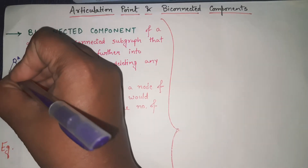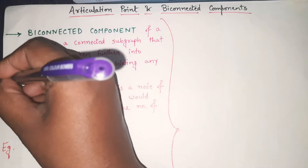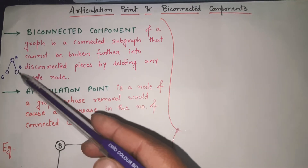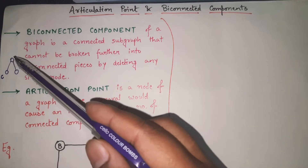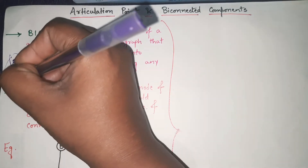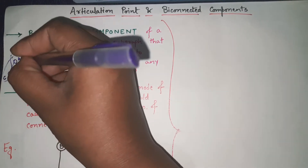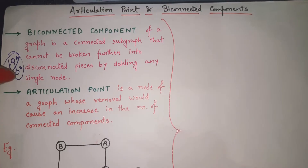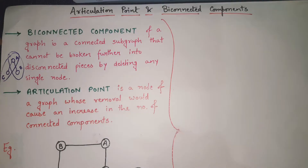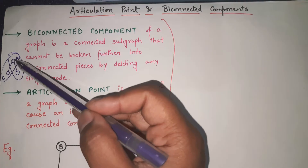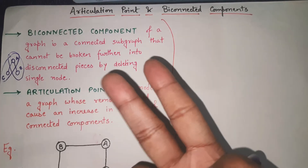Let me show you with an example. Taking one more node C, we have graph A-B-C. Now if I remove C, nothing will happen. If I remove B, nothing will happen. But if I remove node A, then A-C will be one biconnected component and A-B will be another biconnected component. So node A is the articulation point, because breaking the graph at A gives you two biconnected components: A-C and A-B.